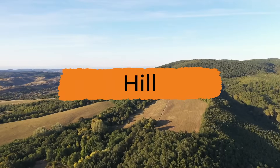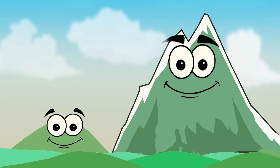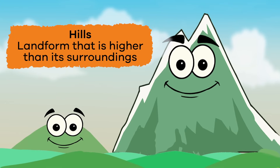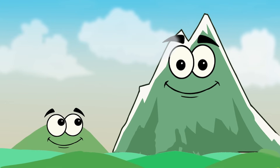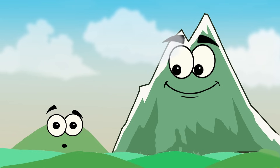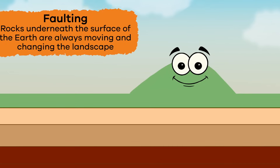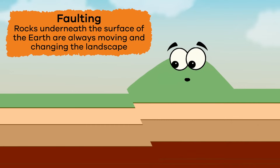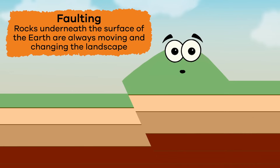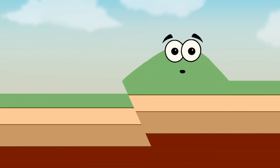Up next, hills. Hills are similar to mountains because they're a landform that is higher than their surroundings. Unlike mountains, however, they're smaller, less steep, and not as tall. Hills are formed all the time in various ways. One of these is called faulting, which happens because rocks underneath the surface of the Earth are always moving and changing the landscape. Sometimes, faulting can turn hills into mountains.